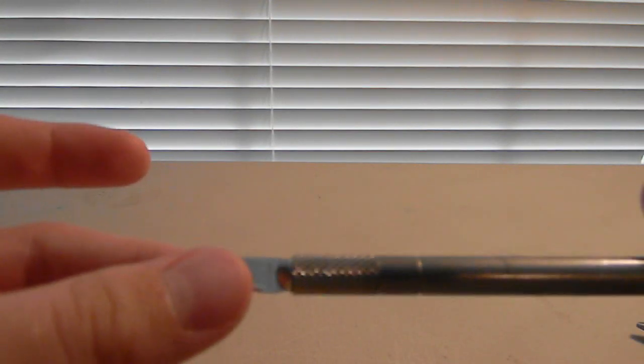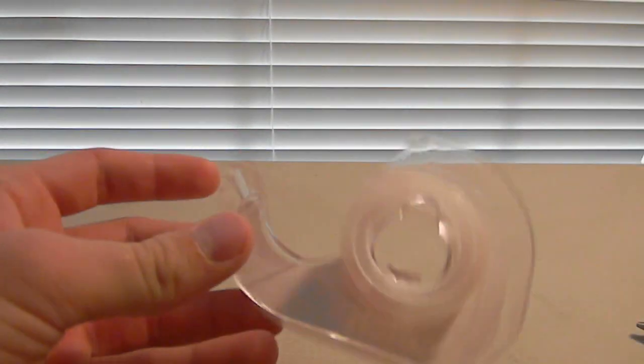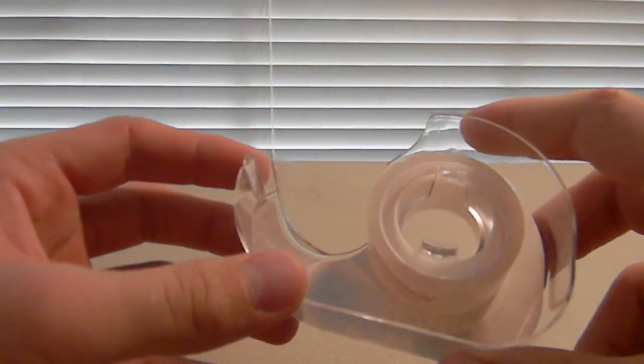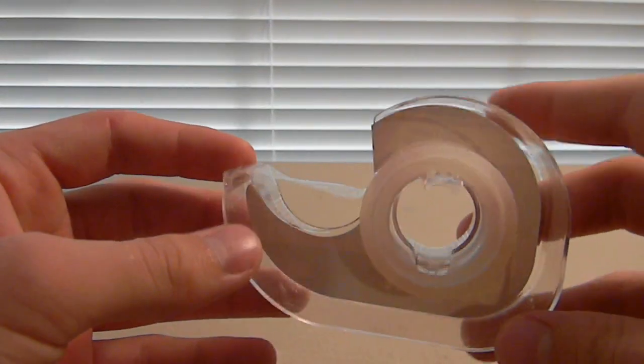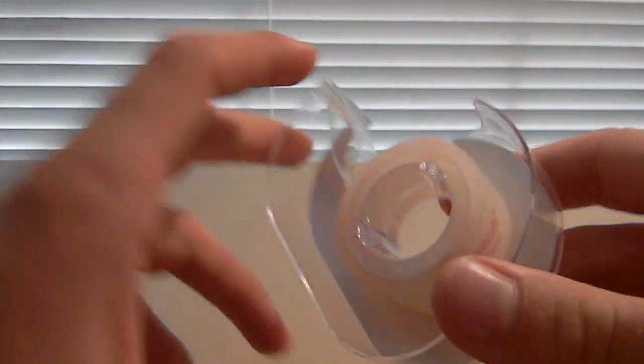What you'll need is a prop, some needle nose pliers, an exacto knife or scissors to cut the tape off your plane, and you'll also need tape to re-tape the other half of the plane together. It can be clear tape or just regular tape.